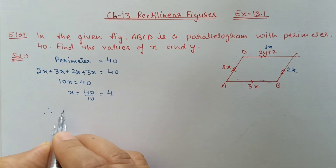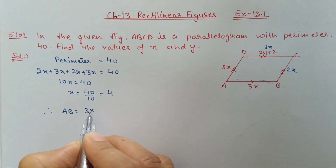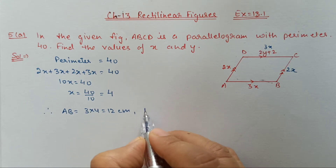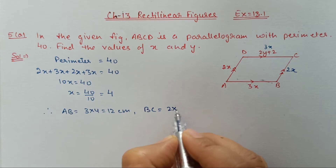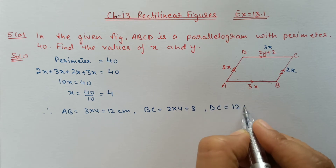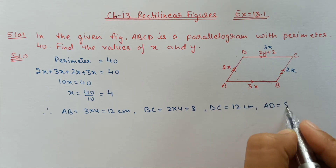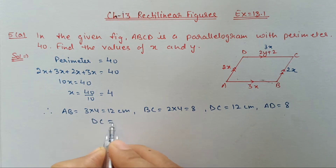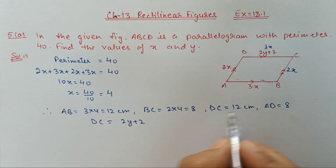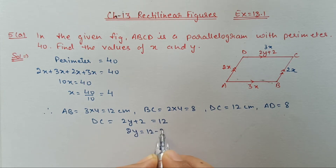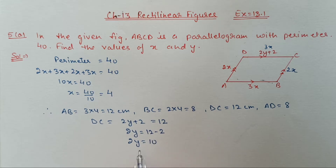Therefore AB equals 3X equals 3 times 4 equals 12 cm. Similarly, BC equals 2X equals 2 times 4 equals 8 cm. DC also equals 12 and AD also equals 8. Now to find Y: DC is given as 2Y plus 2, and we calculated DC equals 12. So 2Y plus 2 equals 12, giving 2Y equals 10, and Y equals 5. So X equals 4 and Y equals 5.